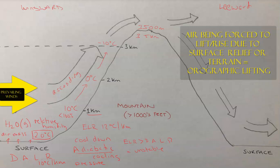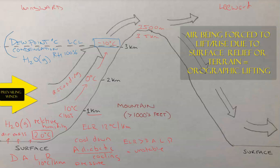At 3 kilometers, we have this horizontal dashed line called the dew point. It's the temperature at which condensation occurs, and this is also called the LCL — the Lifting Condensation Level — the altitude at which the dew point is reached. In this case, the dew point is at minus 10 degrees Celsius. The water vapor in the air increases as it rises until the relative humidity reaches 100% at the dew point, forcing condensation.